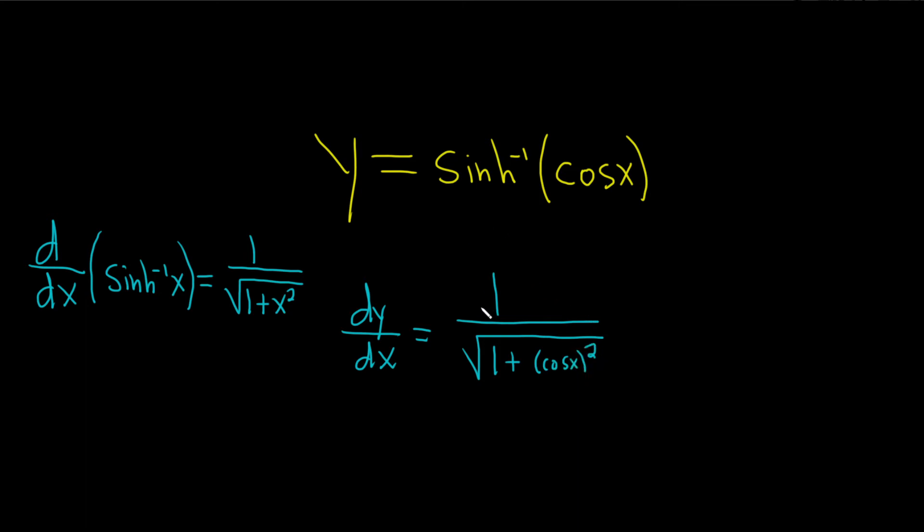So this is the derivative of the outside function evaluated at the inside and then times the derivative of the inside function. So our inside function is cosine and its derivative is negative sinh x.